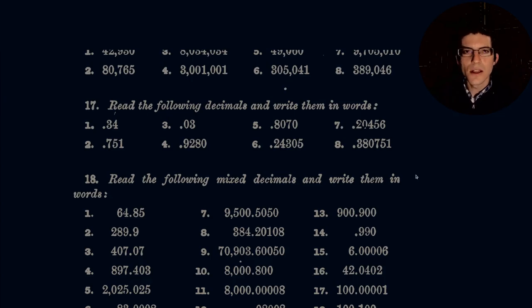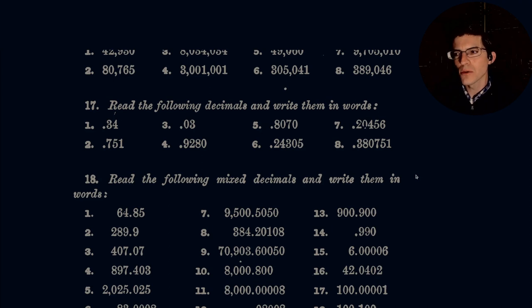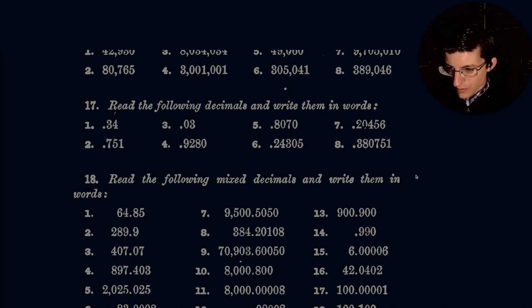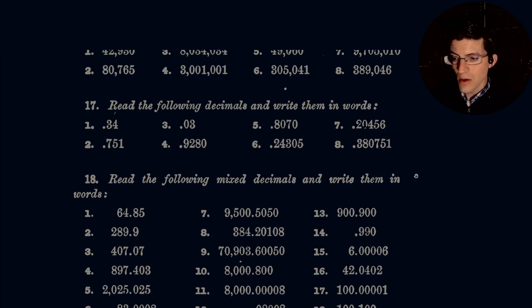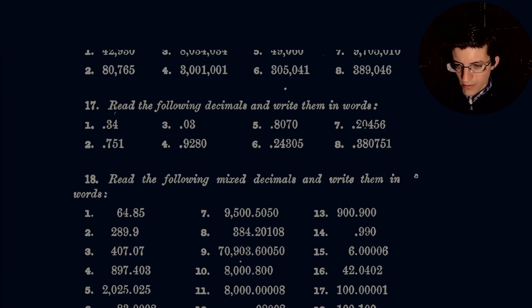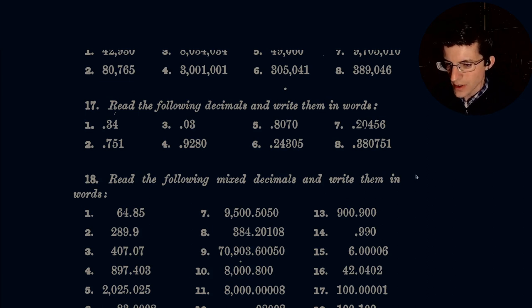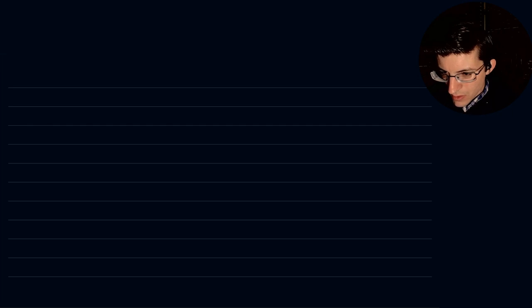Hello everybody, this is a continuation of our math homework and we're going to carry on with section 17, continuing to read and learn how to interpret decimals. With that, let's go ahead and get started. I'll pull up my notes here. The first question is: read the following decimals and write them in words. Our first one is 0.34, thirty-four hundredths. Let's pull up our annotation software.